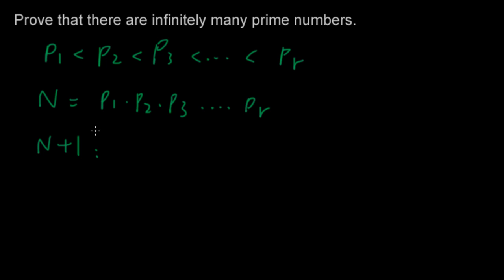Being a composite number, it has to have at least one prime factor. Let's say the prime factor is P I. P I is somewhere in this sequence of prime numbers. Let's say P I is here.